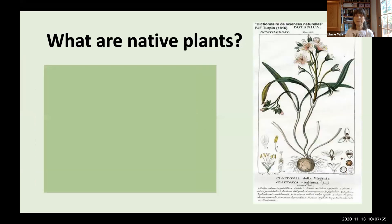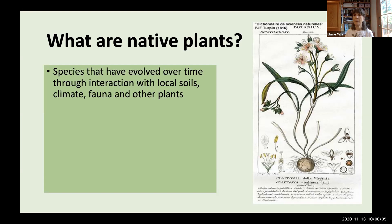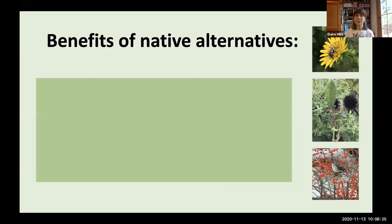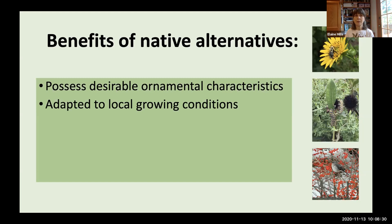I'm going to recommend substituting native plants. These are species that have evolved over time by interacting with the soil, climate, fauna, and other plants in a certain region without any human intervention or cultivation. As far as North America is concerned, these are species that were here prior to European settlement. Benefits of native alternatives include desirable ornamental characteristics, adaptation to our local growing conditions — climate, soil, water patterns — and having evolved with local fauna.